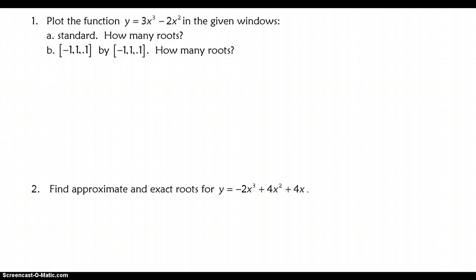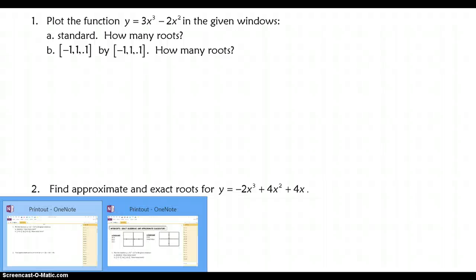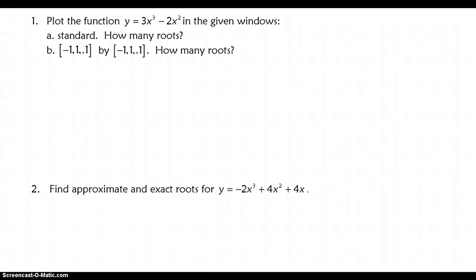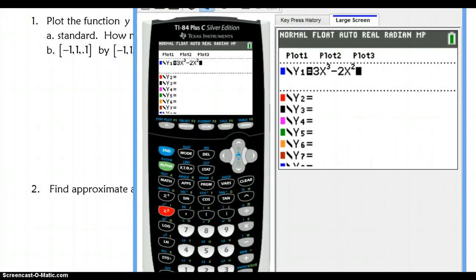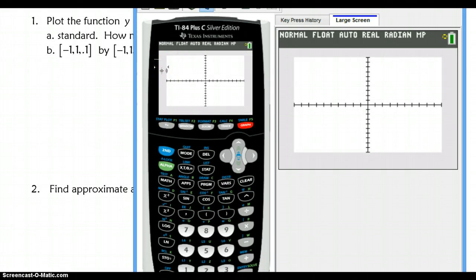Okay, so question number one here asks us to plot the function y equals 3x cubed minus 2x squared. First, the given window is going to be the standard window, and we're going to ask how many roots we have. So let's take a look here. Go ahead and enter that into your calculator, into the y equals. So right now I'm going to hit graph, and I should be in the standard window. And if you're not, you can hit zoom standard here. So here comes my graph now. From the looks of it, you can't really tell how many roots you have. So the view screen right here is very poor. You can't really see much. So right now it's too hard to tell.